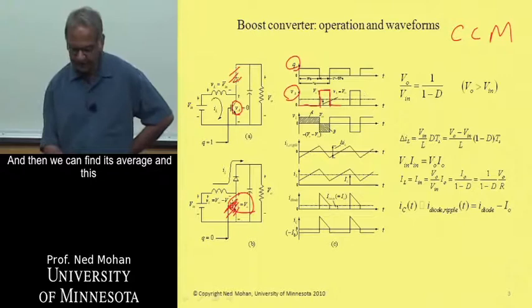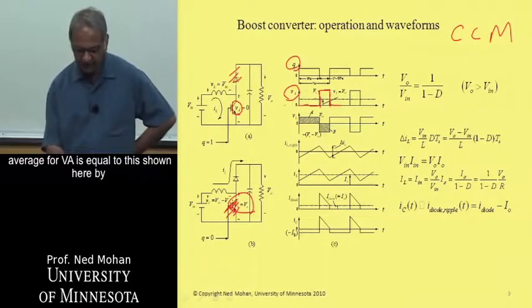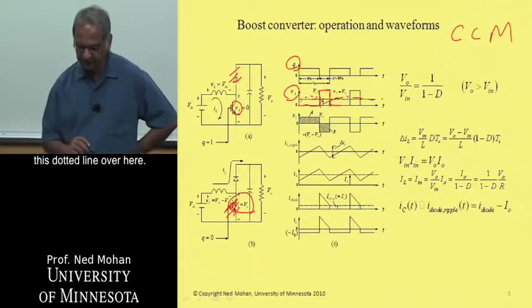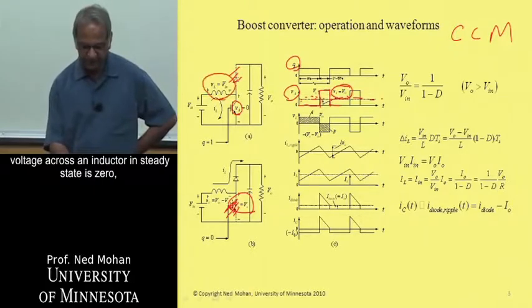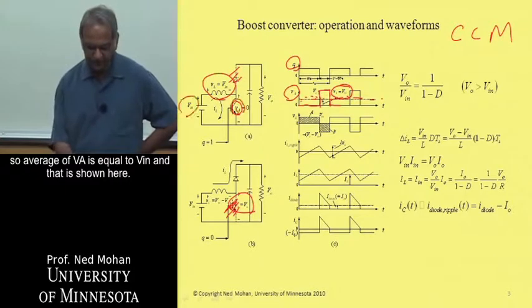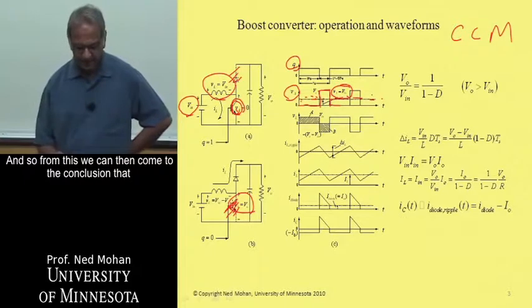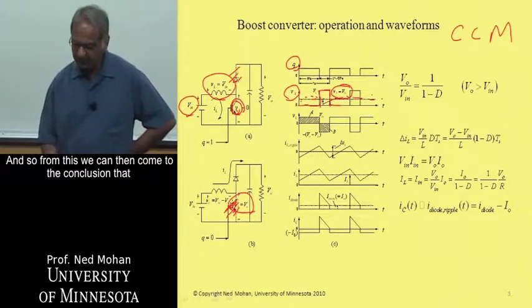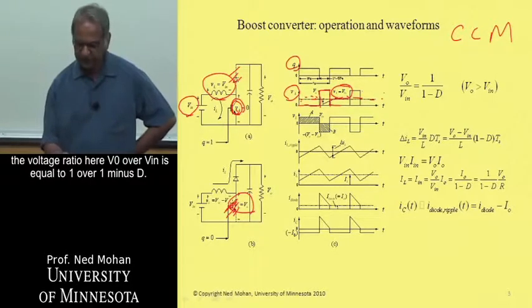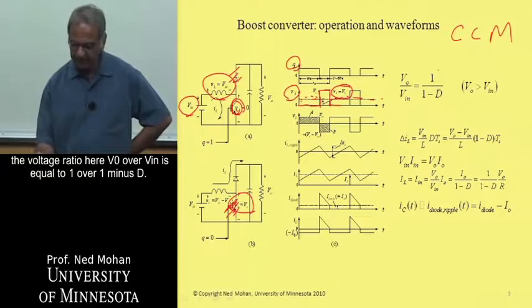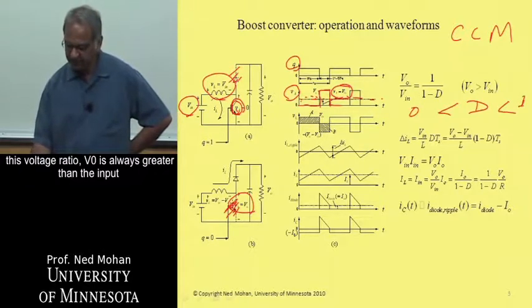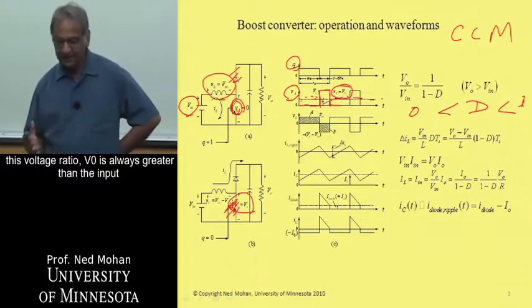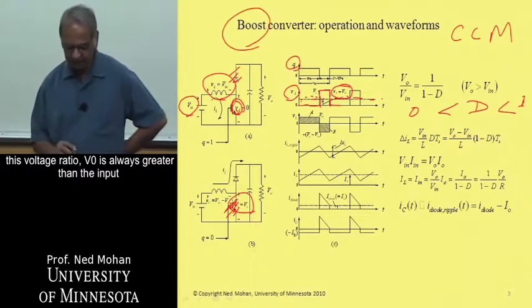Then we can find its average, and this average for VA is shown here by this dotted line over here. And that average is equal to Vin, because the average voltage across an inductor in steady state is zero. So average of VA is equal to Vin. From this, we can then come to the conclusion that the voltage ratio here, V zero over Vin, is equal to one over one minus D. And so D, since it's in the range of zero to one, this duty ratio, V zero is always greater than the input voltage, hence the name boost converter.